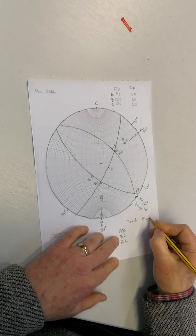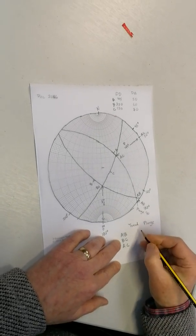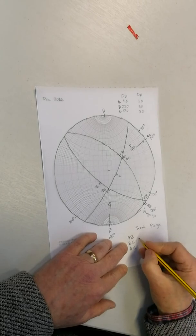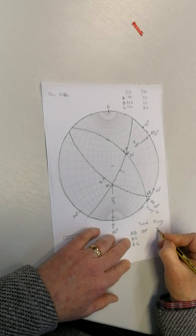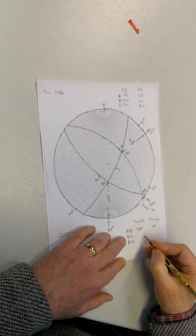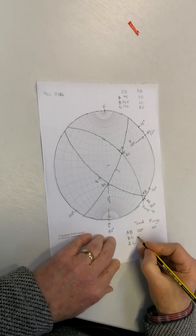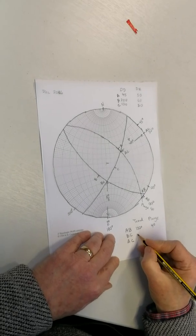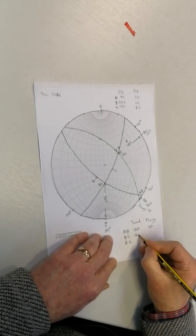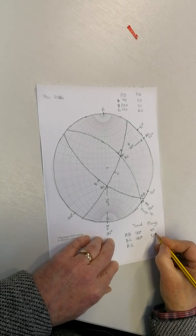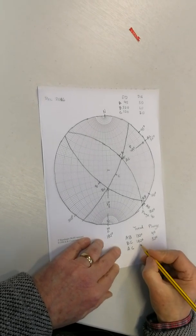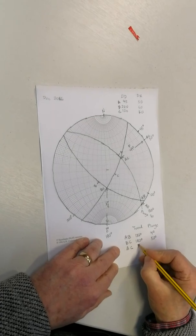So the trend for AB is 132 degrees and the plunge was 4 degrees. The trend for BC was 182 degrees and the plunge was 52 degrees. And for AC the trend was 57 degrees and the plunge was 49 degrees.